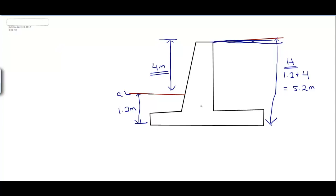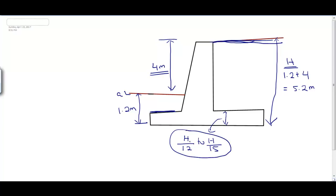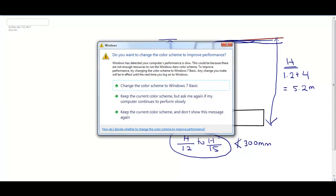Thumb rules for proportioning: Thickness of base slab is between H/12 to H/15, with a minimum of 300 mm. The top width of the stem should be at least 200 mm. The bottom width of the stem is taken as H/12 to H/8 for initial trial. The width of the base slab B is 0.5H to 0.6H when no surcharge is present, or 0.7H when surcharge is present.